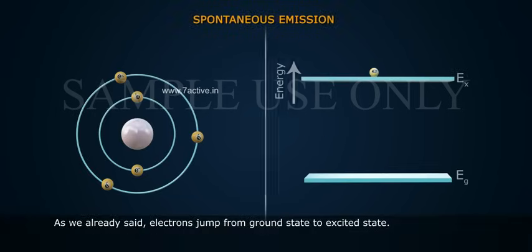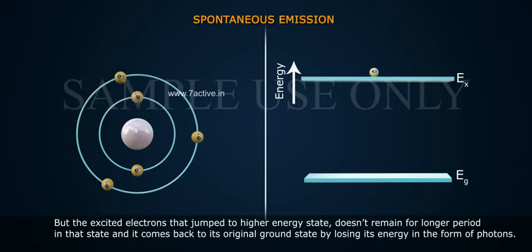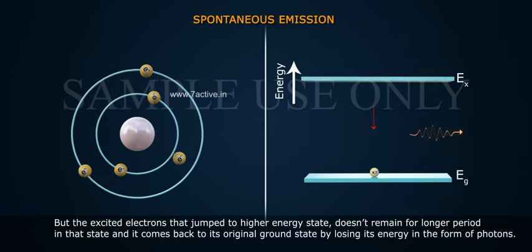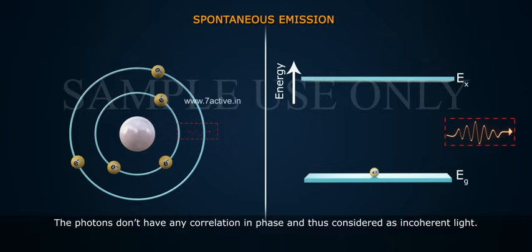As we already said, electrons jump from ground state to excited state, but the excited electron that jumps to higher energy state doesn't remain for longer period in that state and it comes back to its original ground state by losing its energy in the form of photons. The photons don't have any correlation in phase and thus are considered as incoherent light.